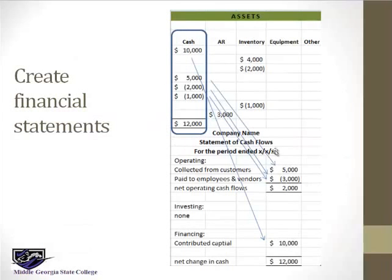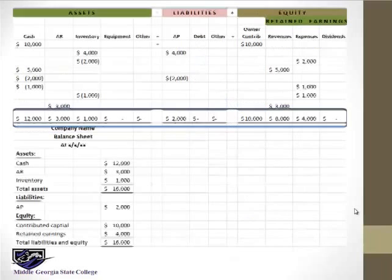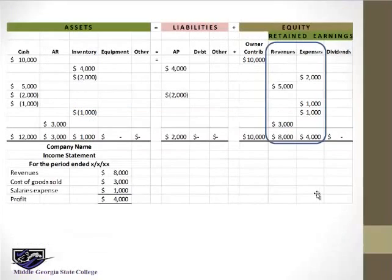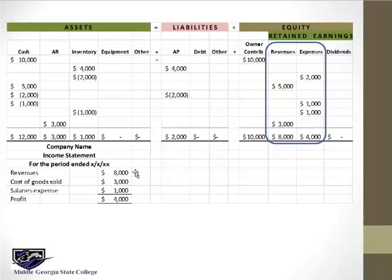The income statement, like the cash flow statement, tells the story for the whole period — summarizing all the events, not just the ending balance. We had two sales: $5,000 and $3,000. We used up inventory — cost of goods sold — and had salaries expense. Importantly, we record the sale whether it's been collected or not, and we record expenses whether they've been paid or not, because the transaction has occurred and the obligation exists both for customers to pay us and for us to pay vendors.